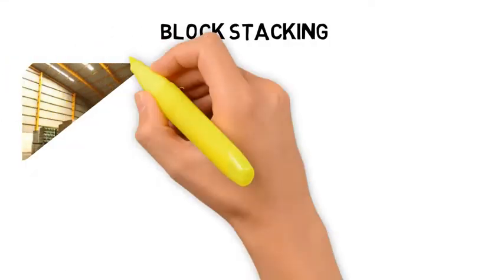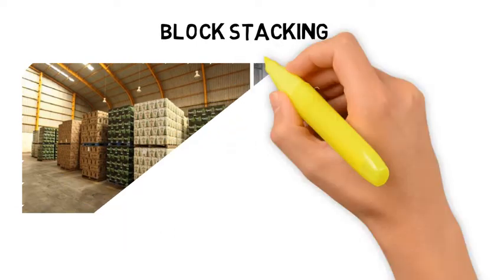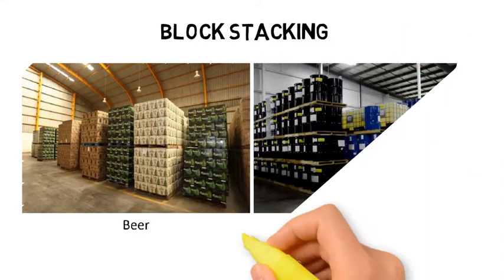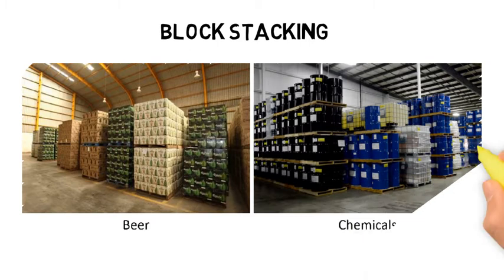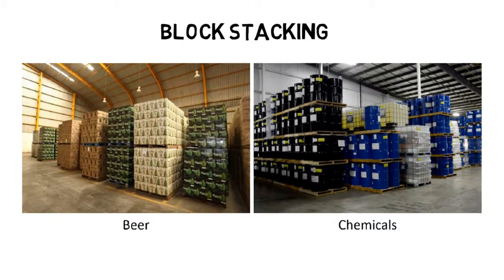What is the right type of cargo for block stacking? Some examples include beer and chemicals. Beer is a fast-moving product — upon production, it is packed into cartons, stacked into pallets, and these pallets can be stacked up to 4 or 5 high without fear of damaging the product. These are usually distributed to retailers very quickly. As the beer does not stay in the warehouse for a long period of time, there is no need to invest in expensive storage systems. Similarly, pharmaceutical production may use chemicals packed in drums or totes. As these chemicals are input into production continuously to support manufacturing, block stacking makes sense.